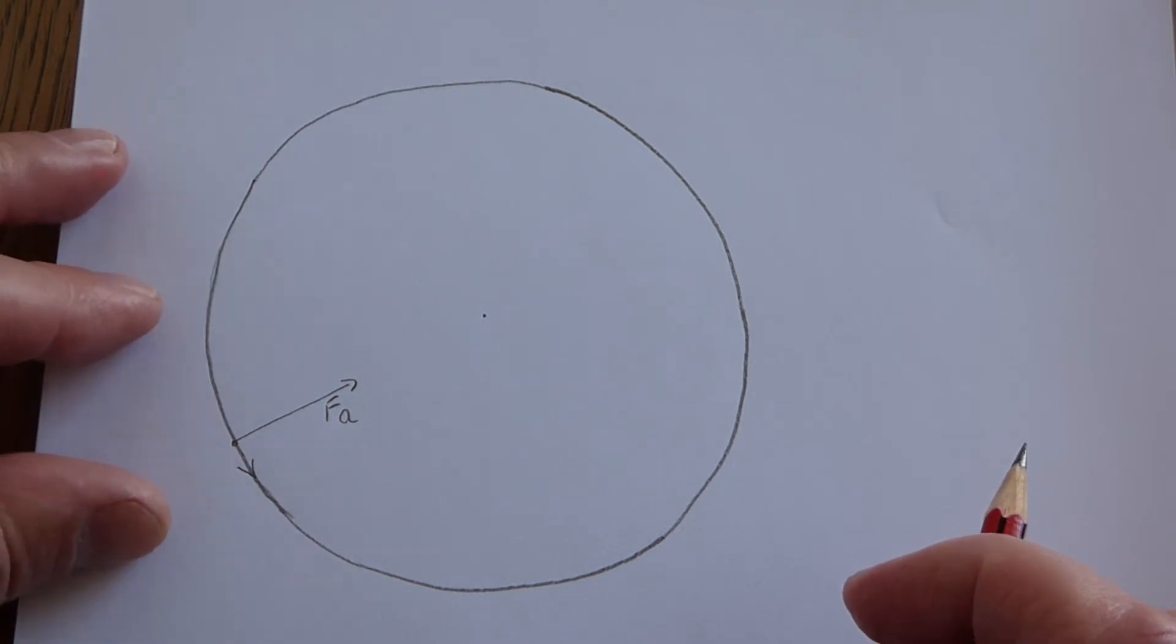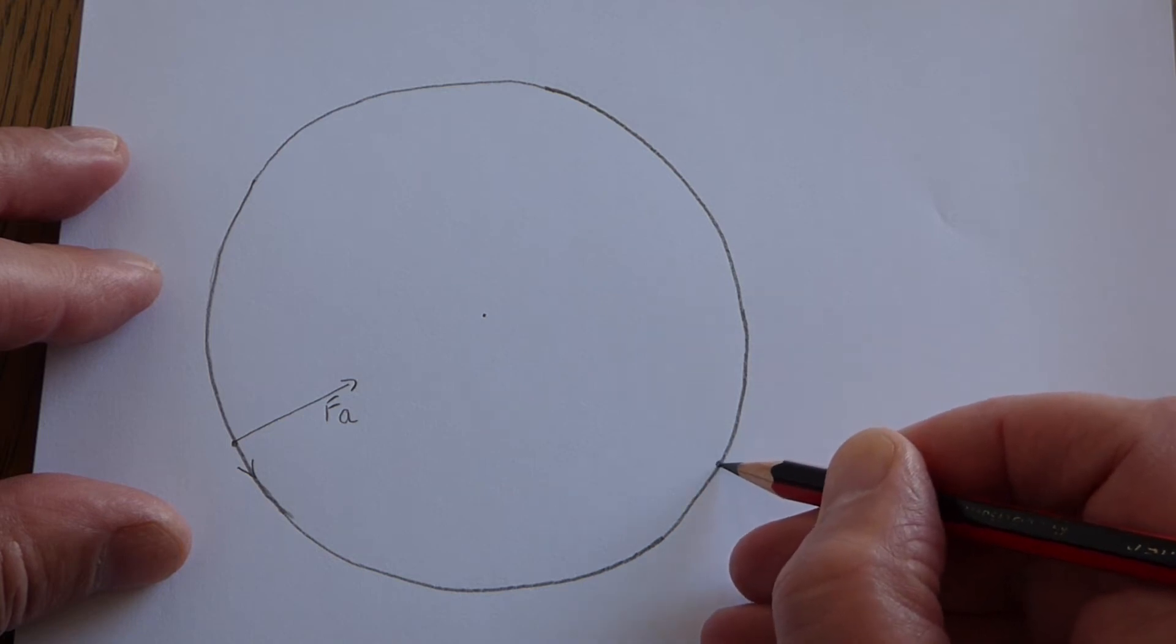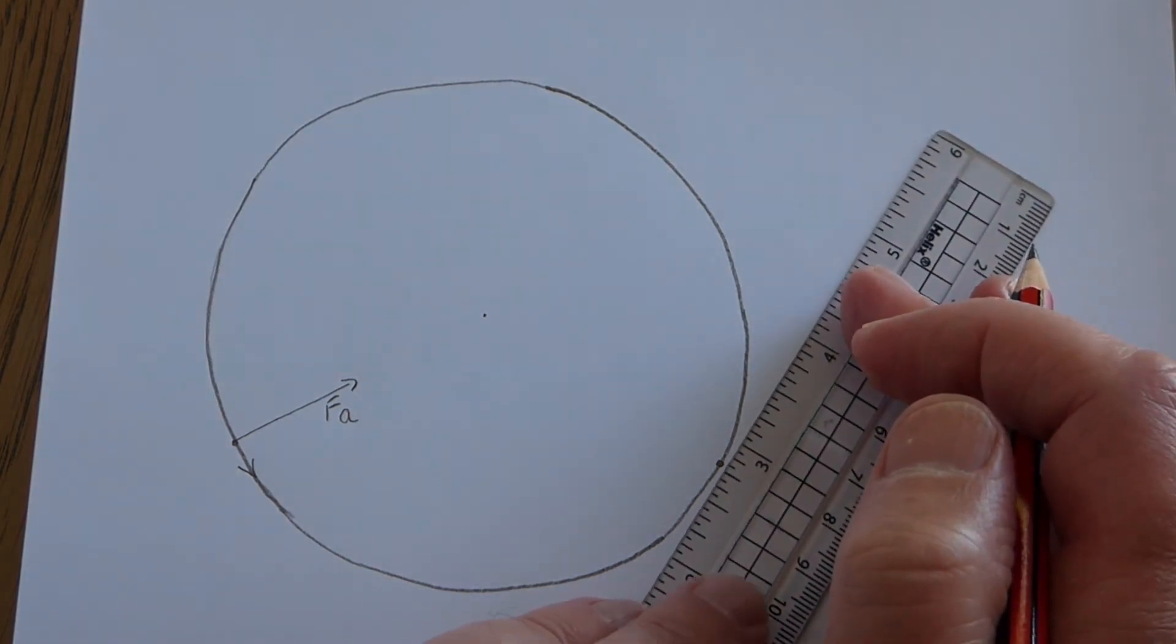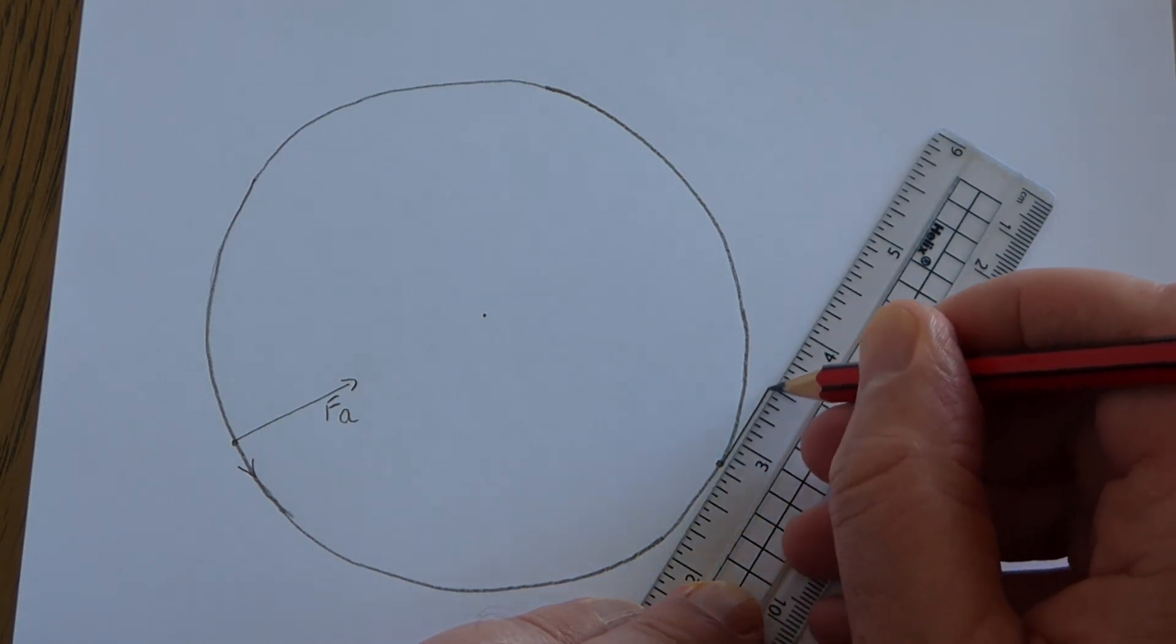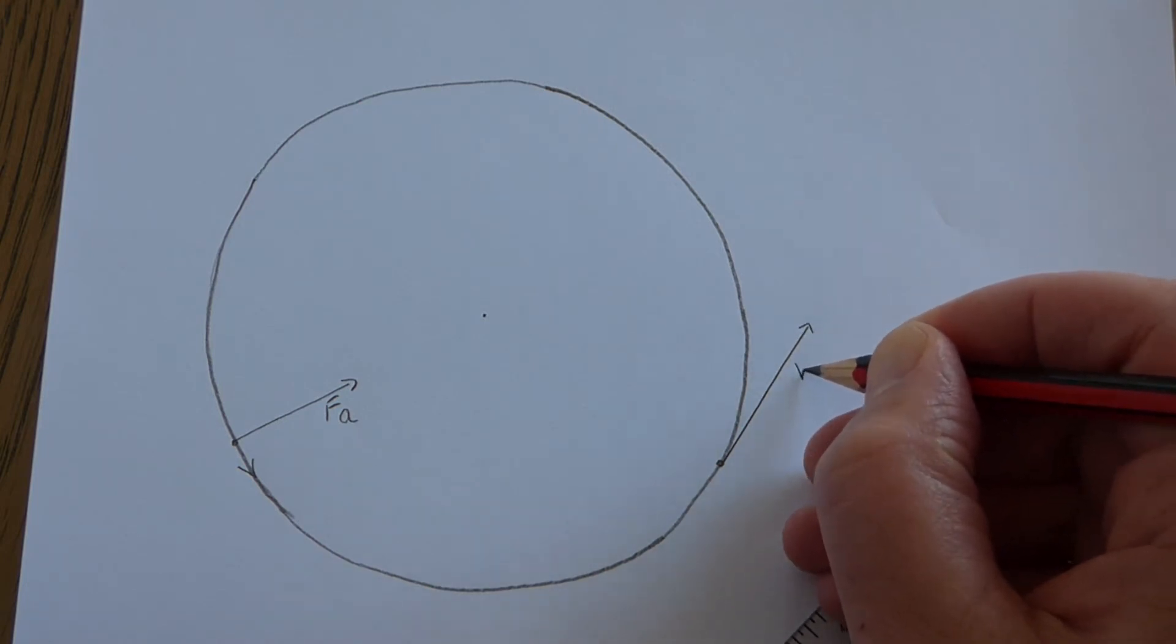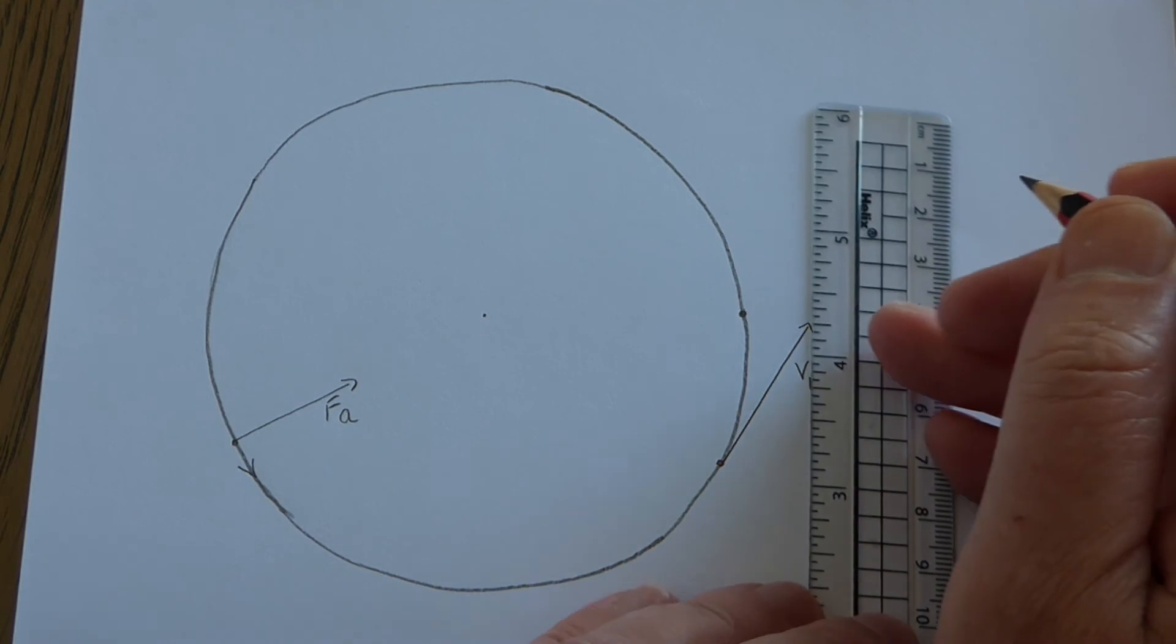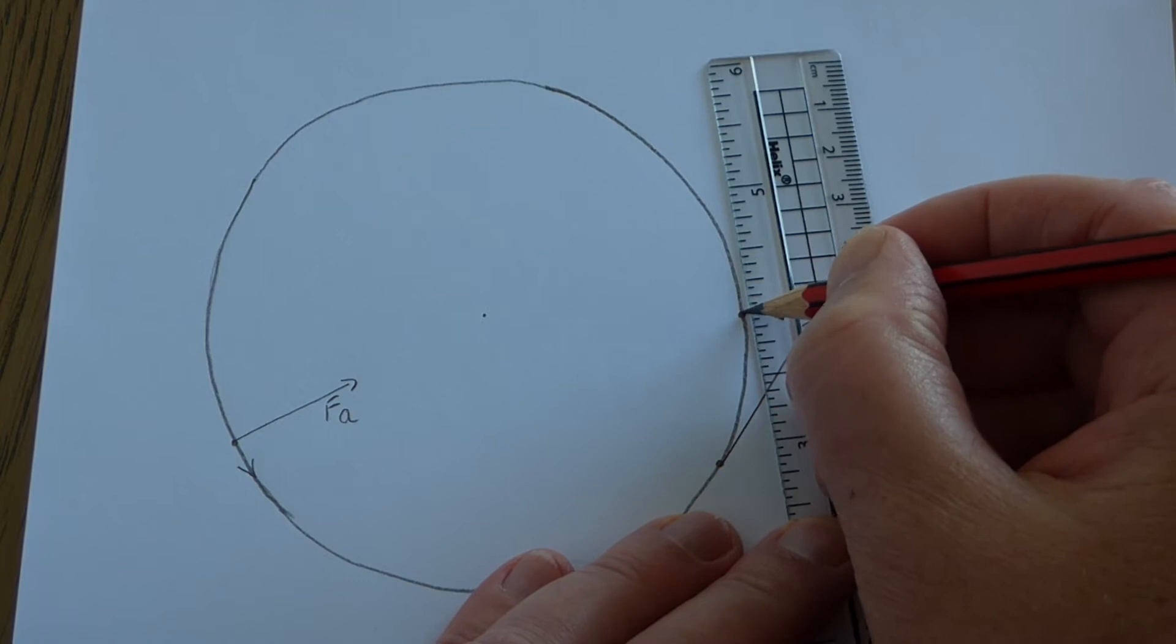What I'm going to do is imagine an object is here and mark in its instantaneous velocity. The instantaneous velocity is tangent to the orbit, so I'm going to draw it like that and call it v1. A bit later on, let's imagine it gets to here and its new velocity is in that direction.